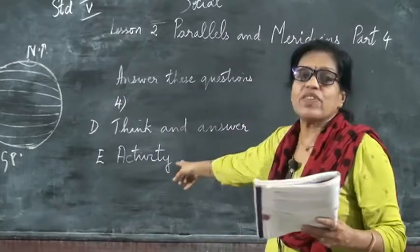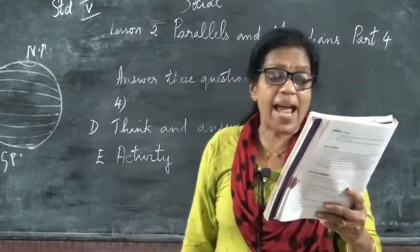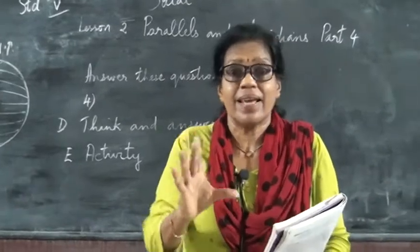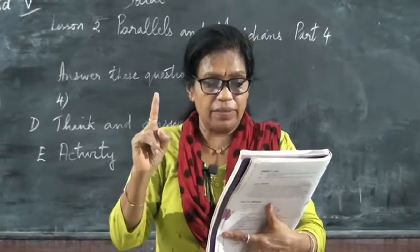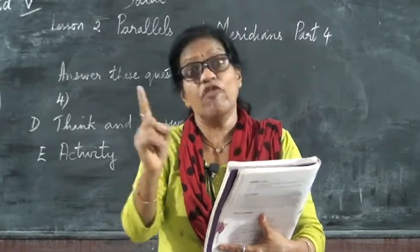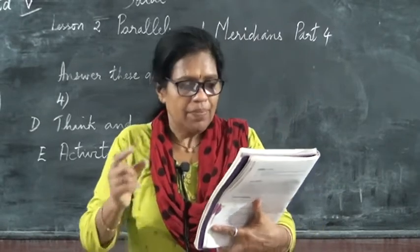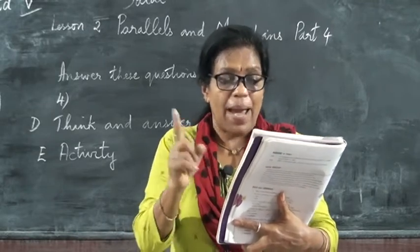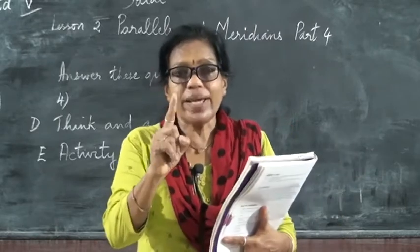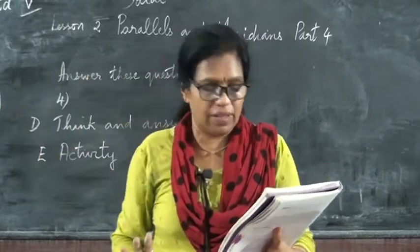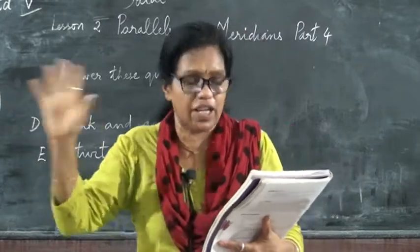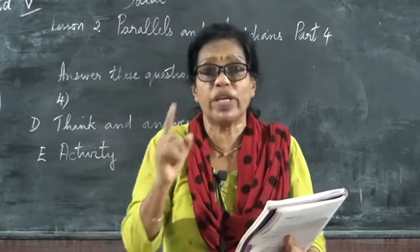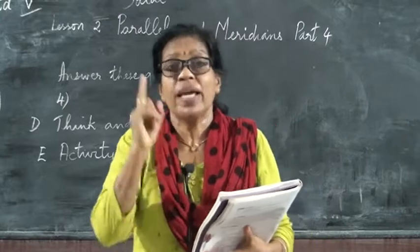The next one is an activity. Through which important parallels pass — the Equator, the Tropic of Cancer, the Tropic of Capricorn, and the Arctic Circle. On the world map, we will see which countries these parallels pass through.